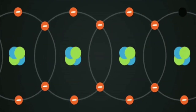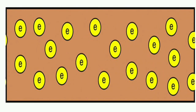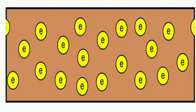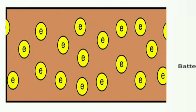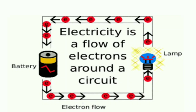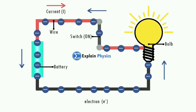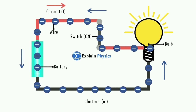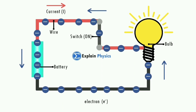We have understood that electricity is essentially a flow of free valence electrons. This unidirectional flow of electrons in a conductor constitutes electric current. In general, electricity is defined as the flow of electric charges, or in particular, the flow of electrons around a circuit. Electrons were not known when the phenomenon of electricity was first observed, so the direction of electric current was considered to be the direction of the flow of positive charges — that is, opposite to the direction of the flow of electrons.